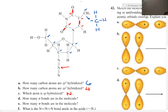How many sigma bonds are in the molecule? You would count them: 1, 2, 3, 4, 5, 6, 7, 8, 9, 10, 11, 12, 13, 14, 15, 16, 17, 18, 19, 20, 21, 22, 23, 24, 25, 26, 27, 28, 29, 30. So approximately 30 sigma bonds.